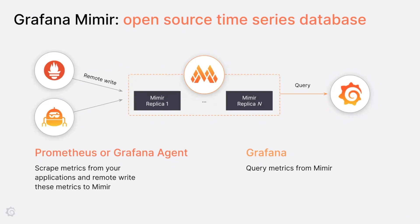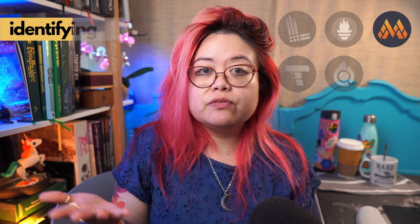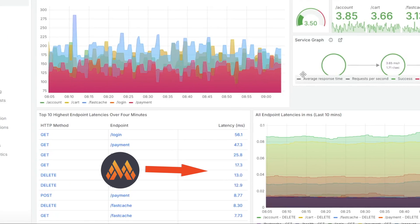Now Mimir is kind of like an addition to Prometheus, and there are two main things that it does. The first is that it provides long-term object storage for Prometheus, and it's also natively multi-tenant, which is something that Prometheus is not as good at. So if you need more than one instance of Prometheus, then Mimir is your best bet. Mimir is like Prometheus, but horizontally scalable and reliable.